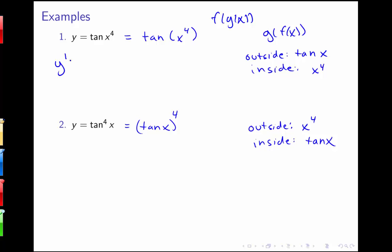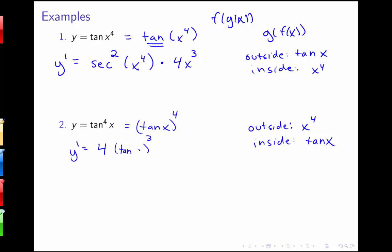Now I'll apply the rule using the formulation where we do the derivative of the outside function, evaluate it at the inside function, and multiply by the derivative of the inside function. For tangent of x to the fourth: the outside function is tangent, whose derivative is secant squared, evaluated at x to the fourth, times 4x cubed — the derivative of the inside. So that becomes secant squared of x to the fourth times 4x cubed. For tangent to the fourth power: the outside function is x to the fourth, giving 4 times tan x cubed, times secant squared x — the derivative of the inside tangent.